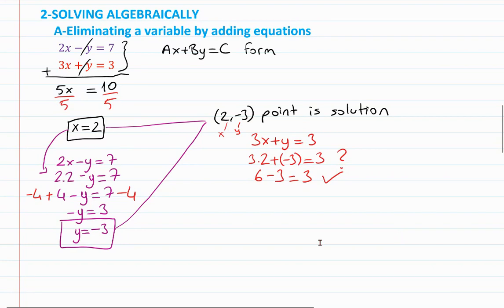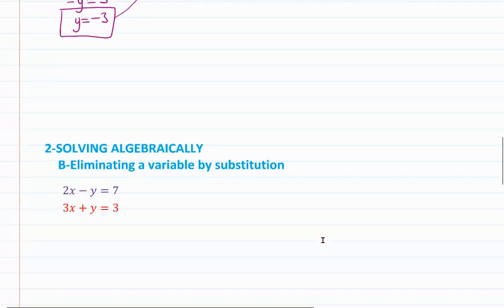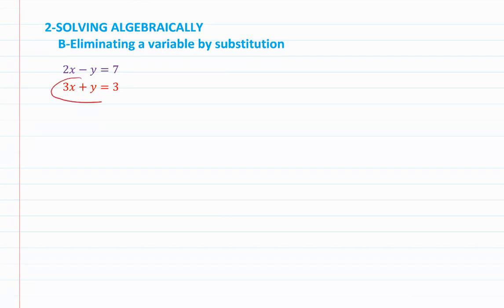Another method is eliminating a variable by substitution. I'm going to use the same equations. First, write one of the equations in terms of one variable. Let's use the red equation.